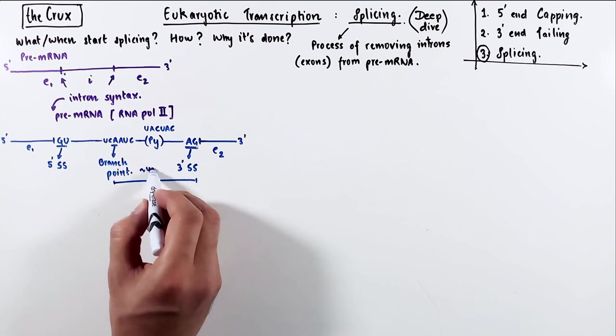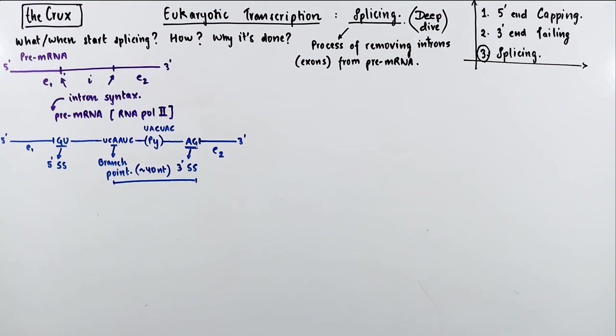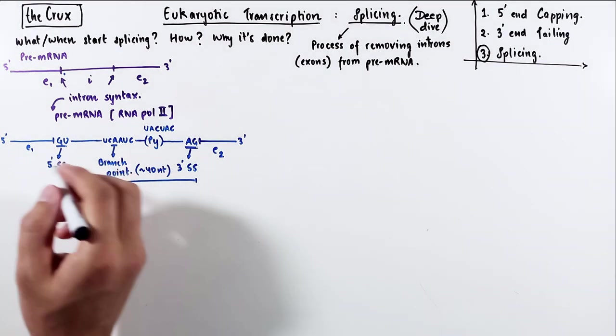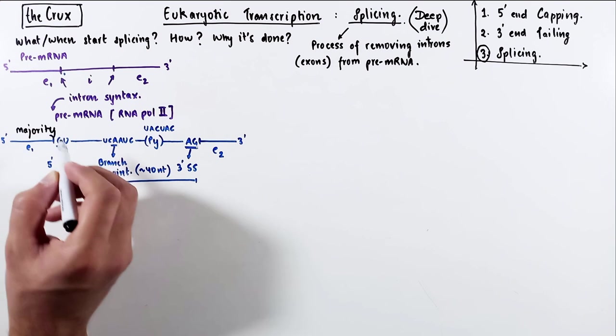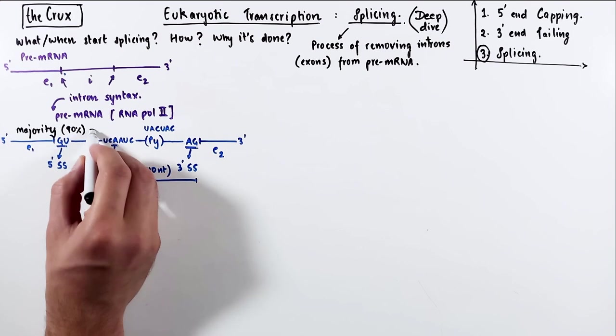And these specific signals or sequences in the intron, the 5' splice site, branch point, pyrimidine stretch, and 3' splice site, make up the intron syntax. This sort of syntax is present in majority, like 90% of the pre-mRNA.